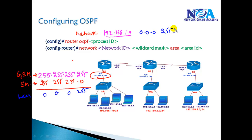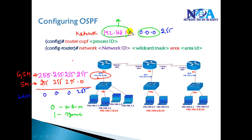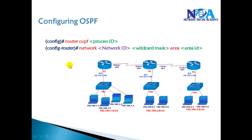The wildcard mask is essentially an inverse mask. Wherever there is a 0, it means 'must match' — so it will advertise all addresses starting with 192.168.1. Wherever there is a 1, it means 'ignore' — that portion can be anything. Remember the formula: subtract the subnet mask from 255.255.255.255 to get your wildcard mask. Then we define the area number to which that interface belongs.